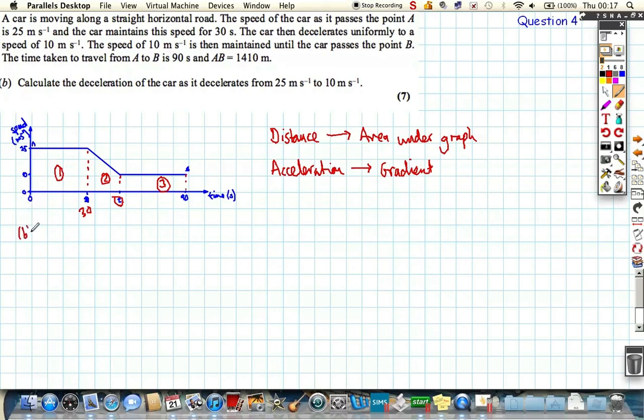So let's keep that in mind. So the first part wants us to find a deceleration, but to find a deceleration we need to know this time t here. And the only piece of information we've not used is that 1410. So let's set up an equation that's got 1410 in it, which is the distance, and then it's going to be the area of each section. So the area of section 1 plus the area of section 2 plus the area of section 3.